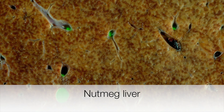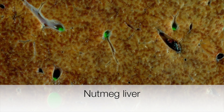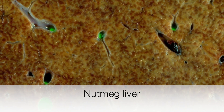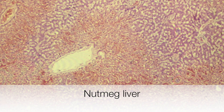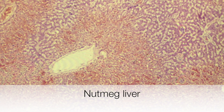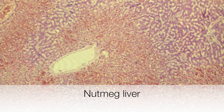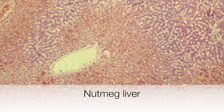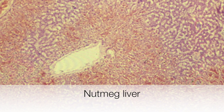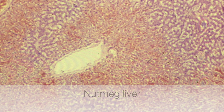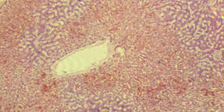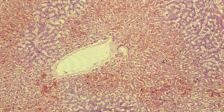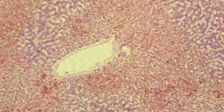This is an example of nutmeg liver. It is caused by chronic venous congestion where the central veins and sinusoids become congested, giving the cut surface a nutmeg-like appearance. This change is seen in patients with congestive cardiac failure or right-sided heart failure.